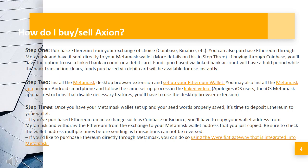How do I buy and sell Axion? Step 1: Purchase Ethereum from your exchange of choice — Coinbase, Binance, etc. You can also purchase Ethereum through Metamask and have it sent directly to your Metamask wallet. More details on this in Step 3. If buying through Coinbase, you'll have the option to use a linked bank account or a debit card. Funds purchased via linked bank account will have a hold period while the bank transaction clears.